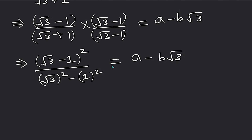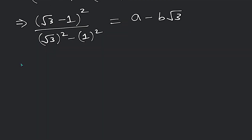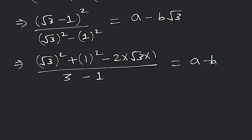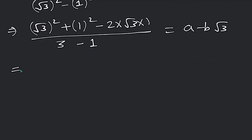And then a minus b√3. Now in the numerator we expand (√3 - 1)² using the formula a² + b² - 2ab. So that gives us (√3)² + 1² - 2·√3·1, which is 3 + 1 - 2√3. In the denominator we get (√3)² - 1² which is 3 - 1 = 2. And here on the right-hand side we have a minus b√3.